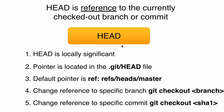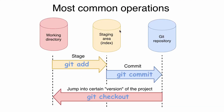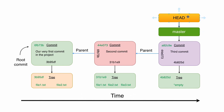Now we will try to move HEAD, and for that we will use the git checkout command. Please note that git checkout is used when you want to change the version of your project. When you use this command, git takes a specific version of the project from the git repository and replaces the contents in the staging area and working directory. All git actually does under the hood is move the HEAD pointer — nothing else.